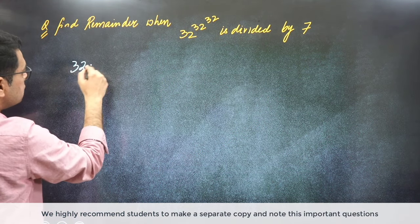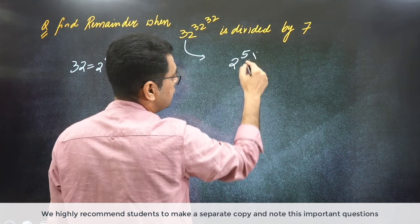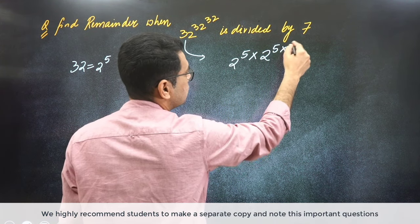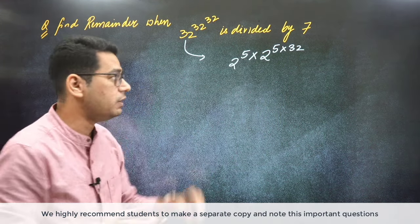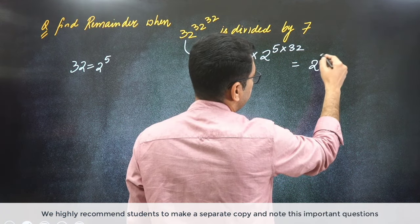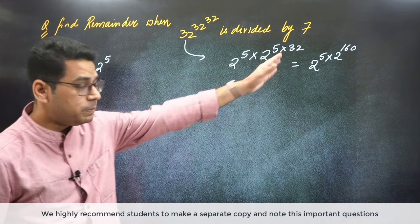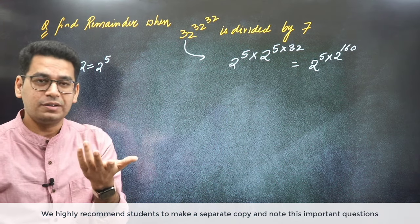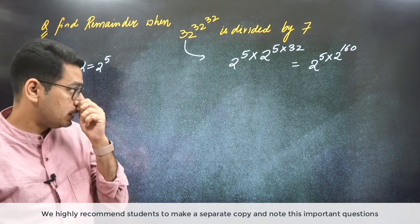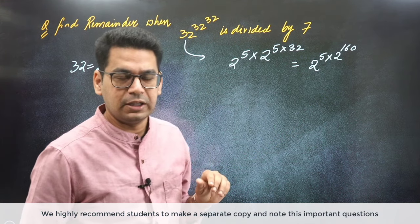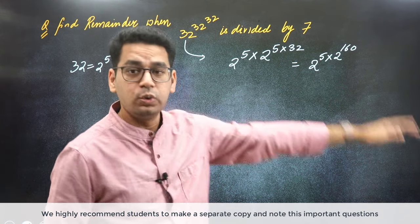So 32 we know is 2 raise to power 5. Right? So I could have expressed this equation as 2 raise to power 5 into 32. Sometimes students get confused with powers. So take a moment and think about it and you will derive it very easily. So this becomes 2 raise to power 5 into 2 raise to power 160. Sir, we are not getting any pattern here. We are not getting anything out at this point in time here. Let's see the pattern of 2 raised to power 160. Let's try to understand what is happening here.